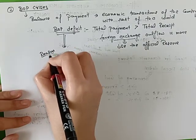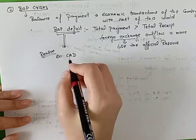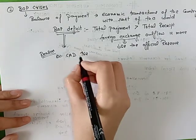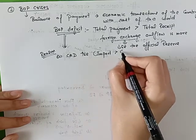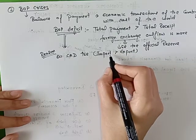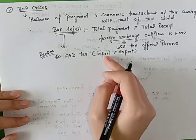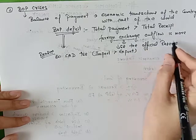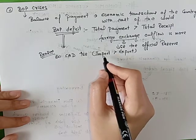The reasons behind the BOP deficit: the first reason is current account deficit. Our current account deficit increased very much. Current account deficit means imports are greater than exports. Hum jitna zyada export nahin kar rahe the, utna zyada hum import kar rahe the — that means a lot of money was flowing out of the country, and our official reserves were declining because we were importing in excess of exports.